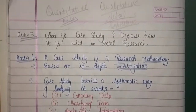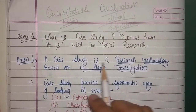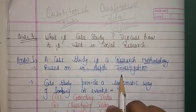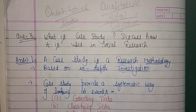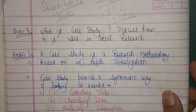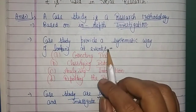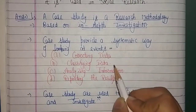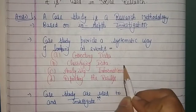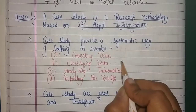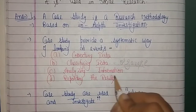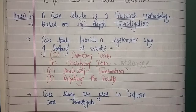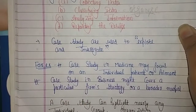Case study is a research methodology based on in-depth and detailed investigation of a topic. Your particular viewpoint, thought process, and observation are properly mentioned in a case study. There is a systematic way of looking at an event — systematic means in sequence. First you collect data, then classify data of the same nature, then you analyze your information, and after observing your results you prepare your findings.